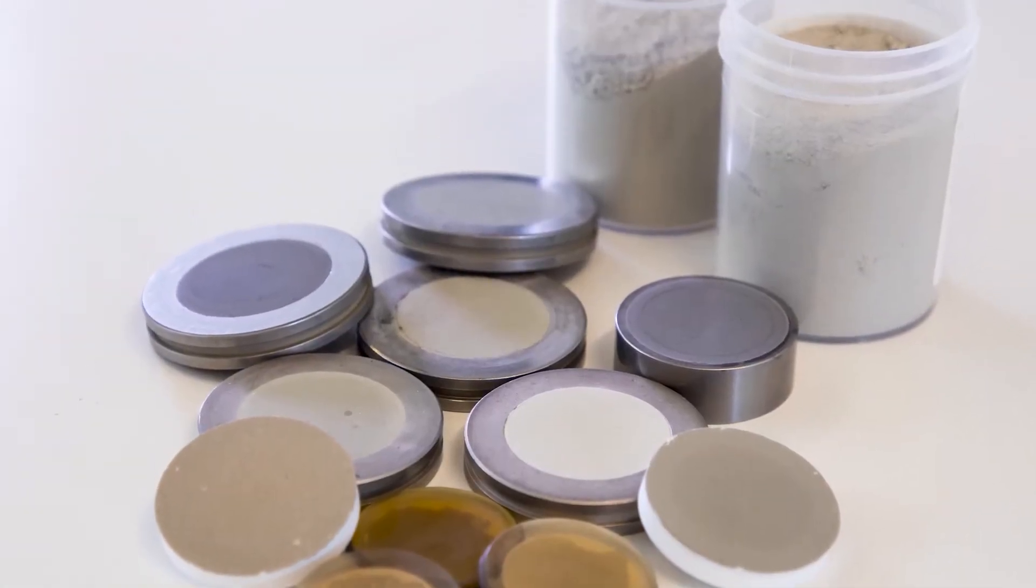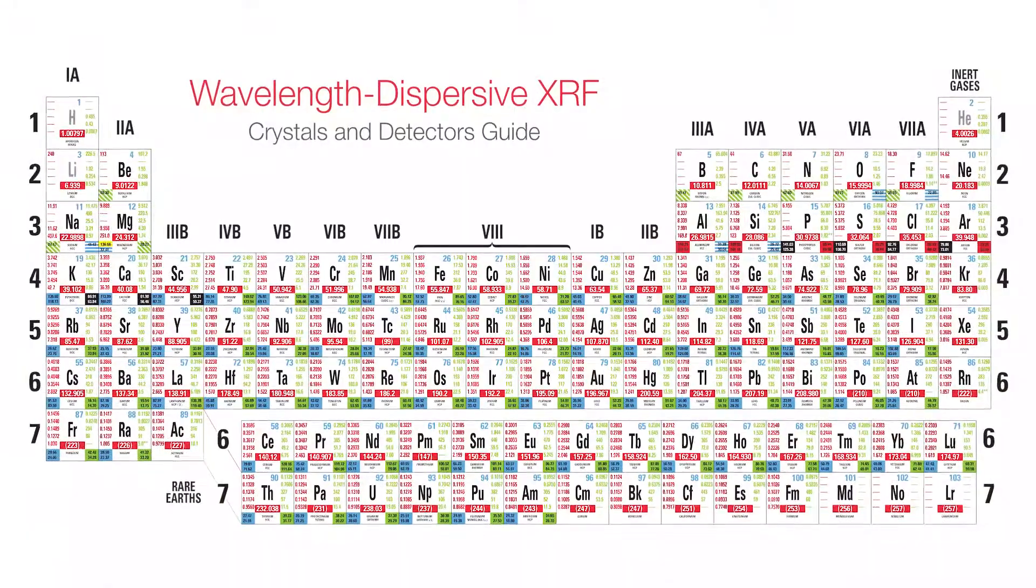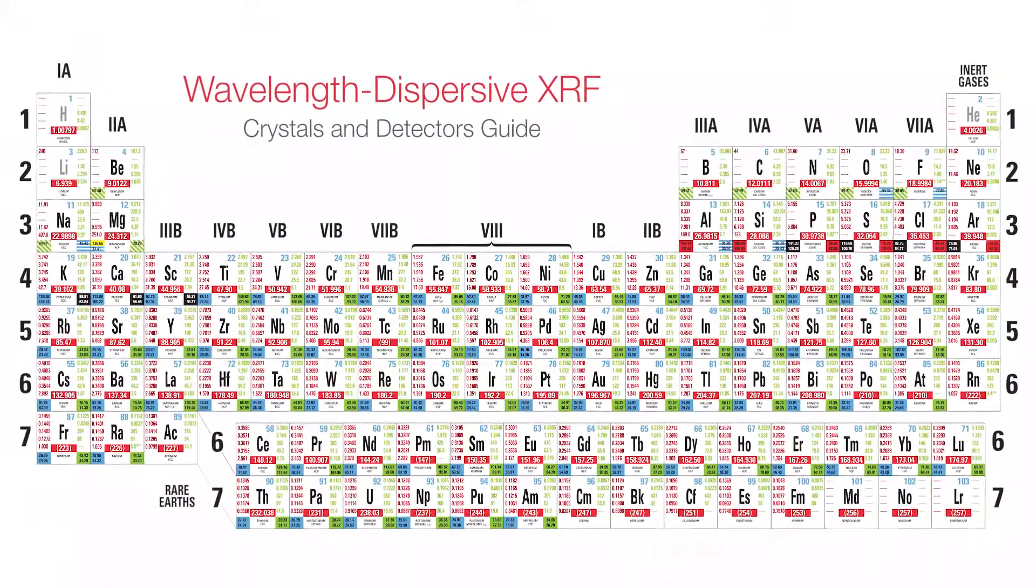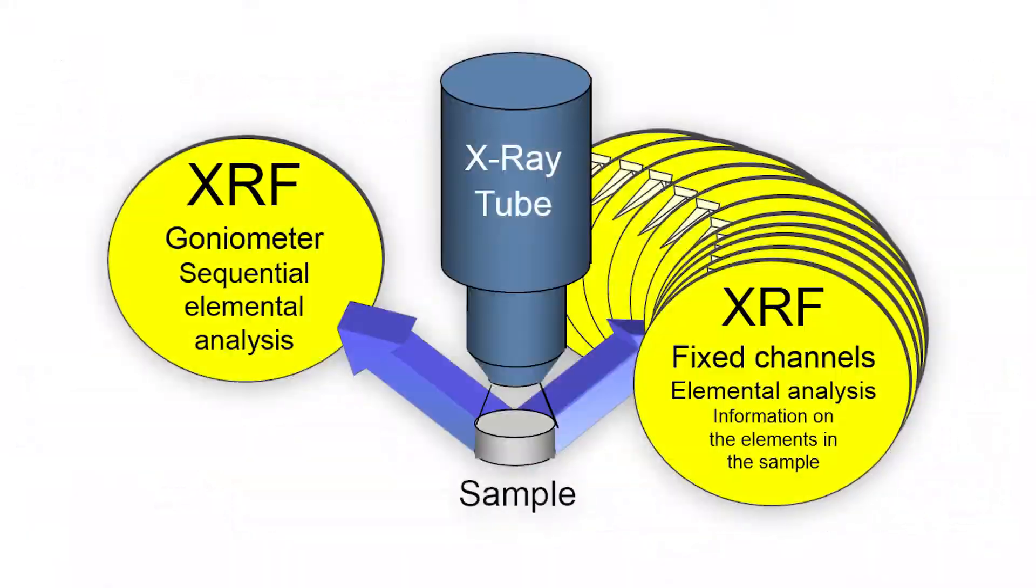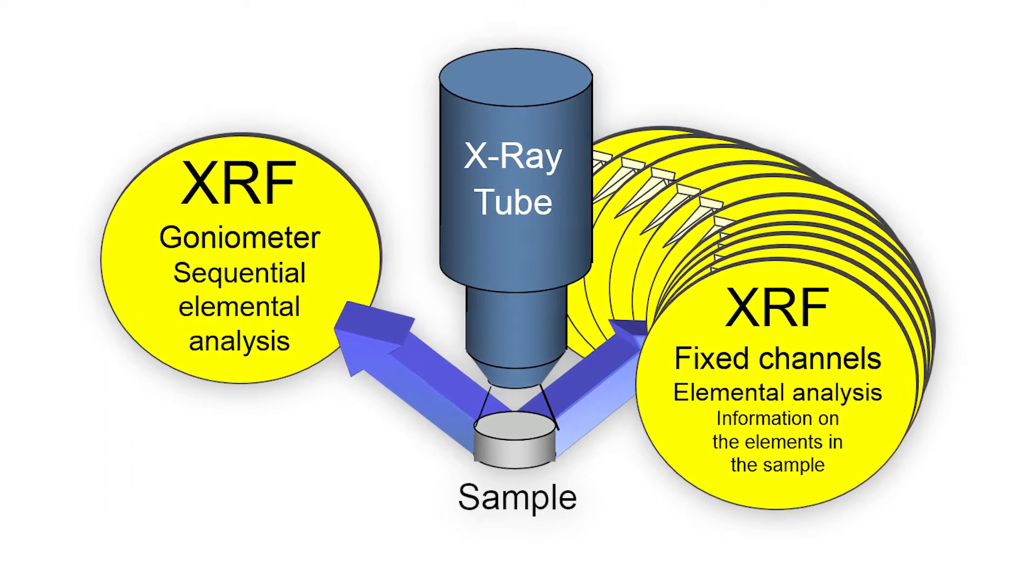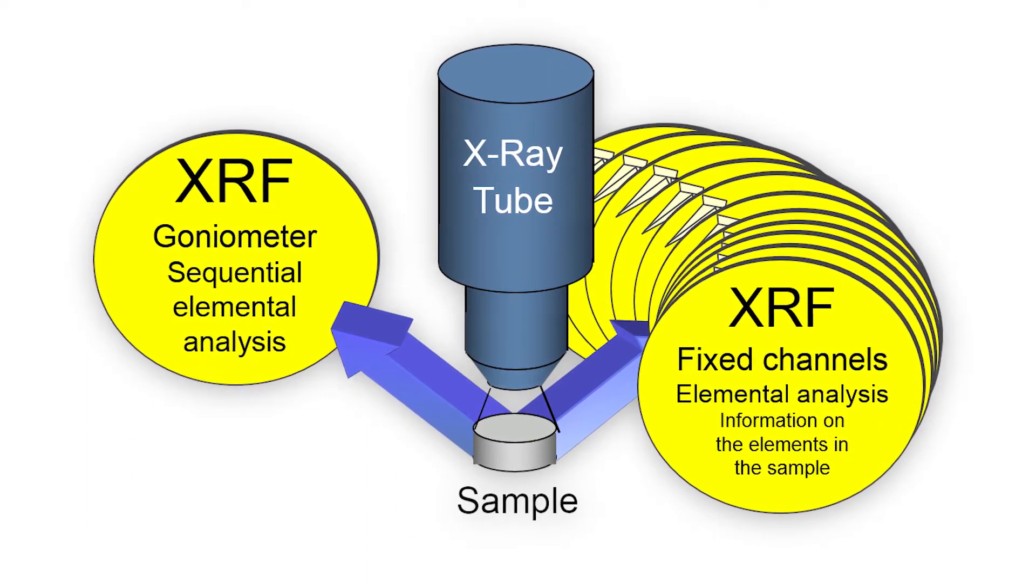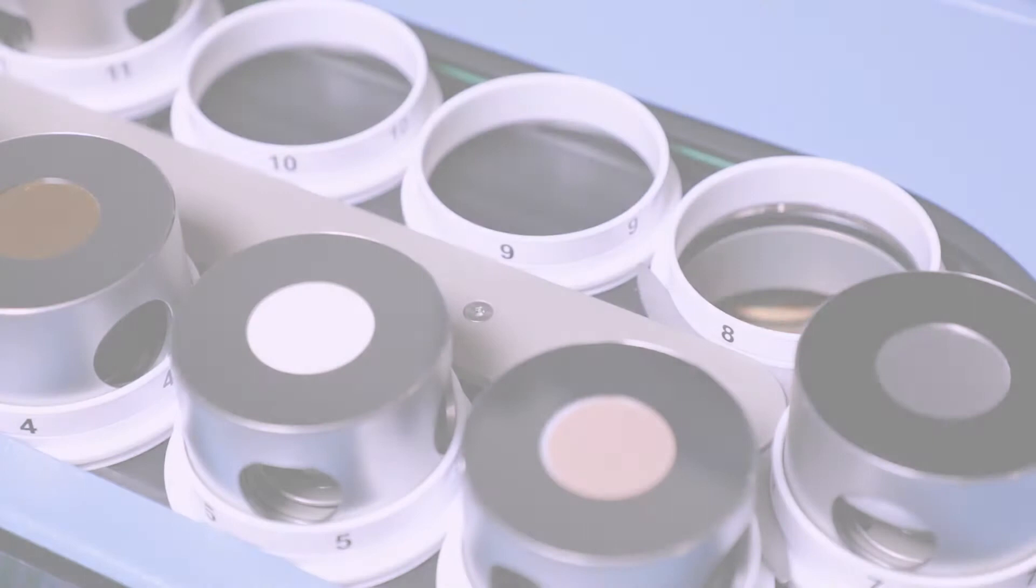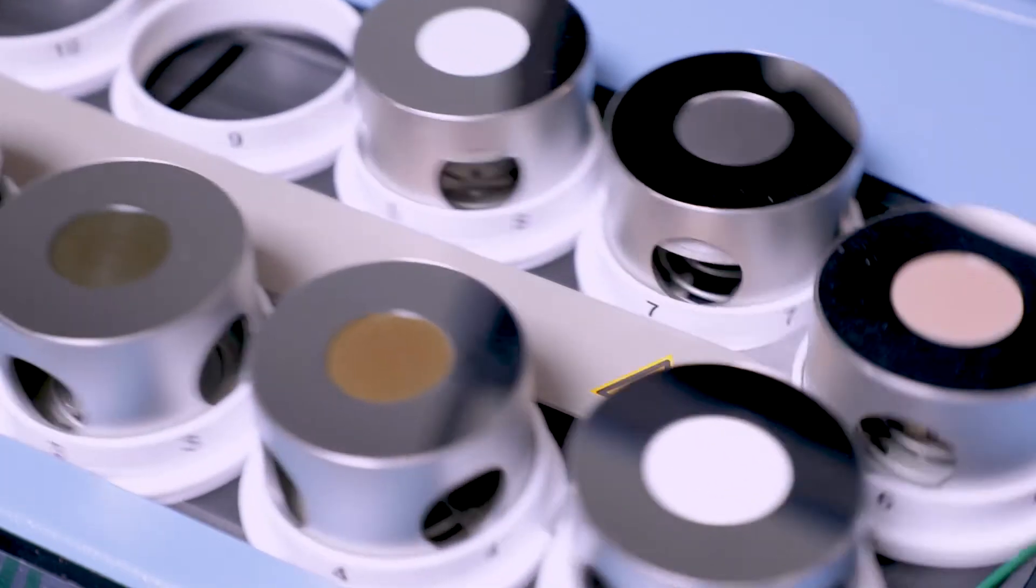Up to 90 elements can be detected in concentrations ranging from parts per million to 100%. A series of fixed monochromator channels can be fitted alongside the goniometer, which makes the ARL 9900 highly productive. A new sample can be analyzed every minute for up to 30 elements.